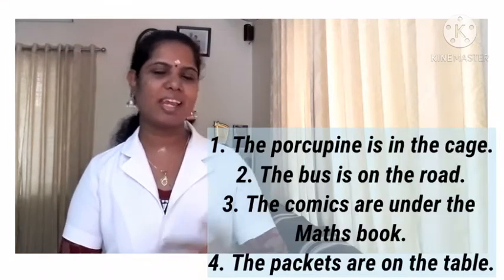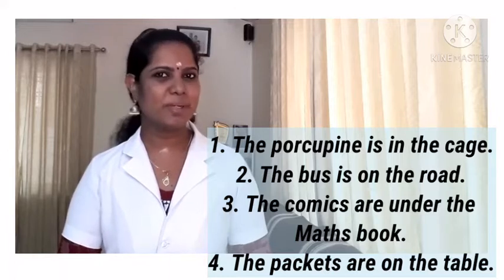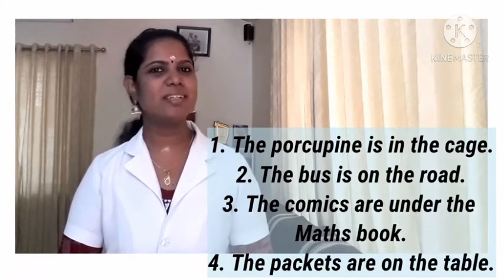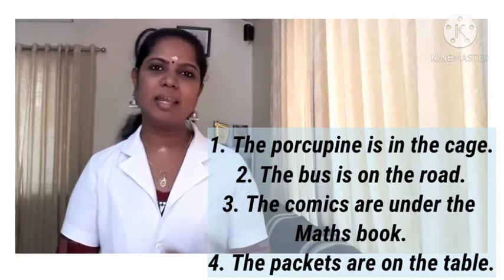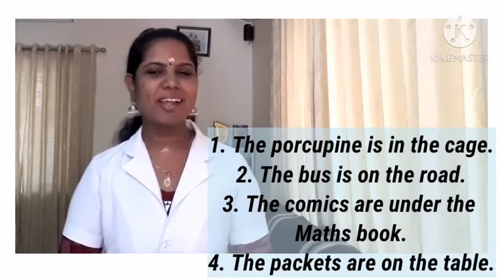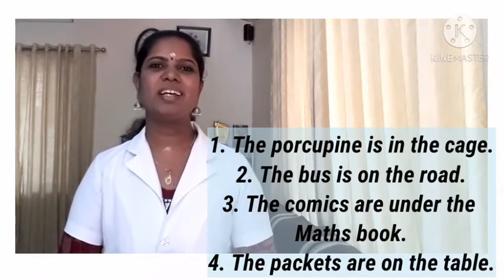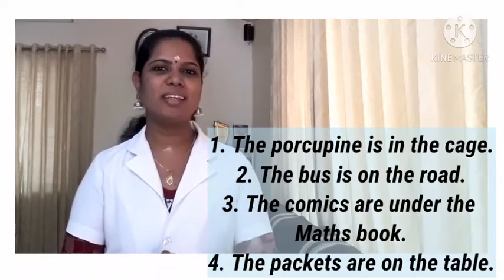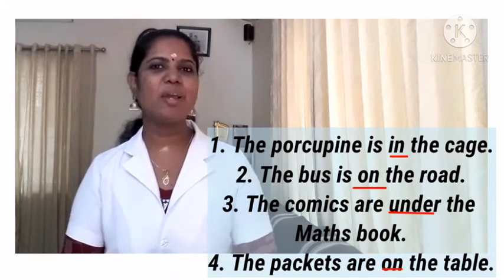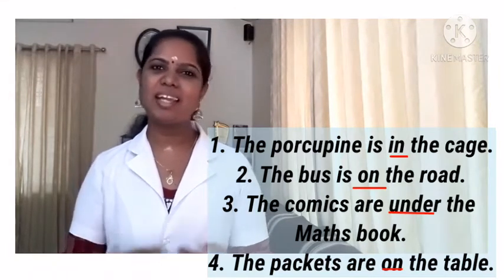So let's look at the examples given in our text. The first one is: the porcupine is in the cage. The second one: the bus is on the road. The third one: the comics are under the max book. And the last one: the packets are on the table. I have stressed some words in these sentences. Which are those words? They are in, on, and under.